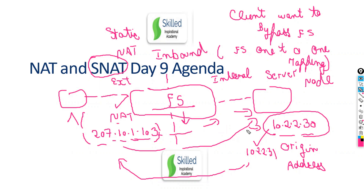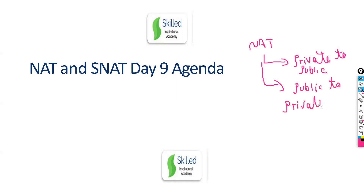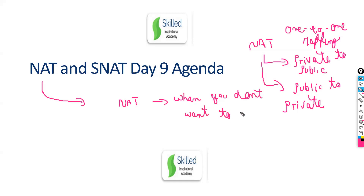NAT provides only one-to-one mapping — either private to public or public to private. F5 NAT supports both directions but only one-to-one. NAT is generally done in a firewall, but when a firewall is not in the picture, or when you don't want any load balancing feature, NAT is used. There is no load balancing you can perform with NAT — that is the second use case of NAT.